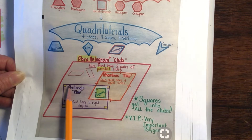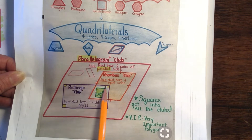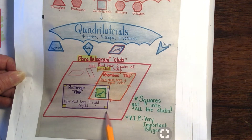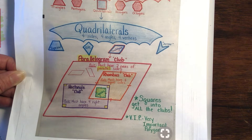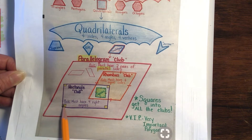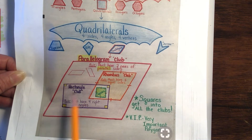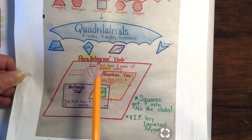Same with a rectangle. This side is parallel with this side, this side is parallel with that side — there are two parallel sides. And this one has four right angles and four corners, so it fits in the parallelogram club.